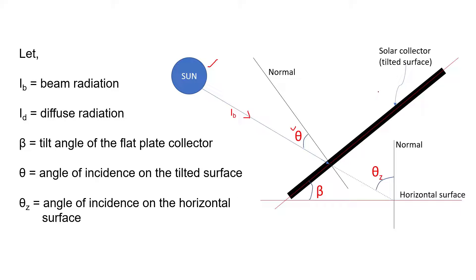This tilted surface represents the solar collector. The tilt angle of the solar collector has been shown here by beta. If we extend this solar radiation, it will fall on this horizontal surface at an angle of theta z.